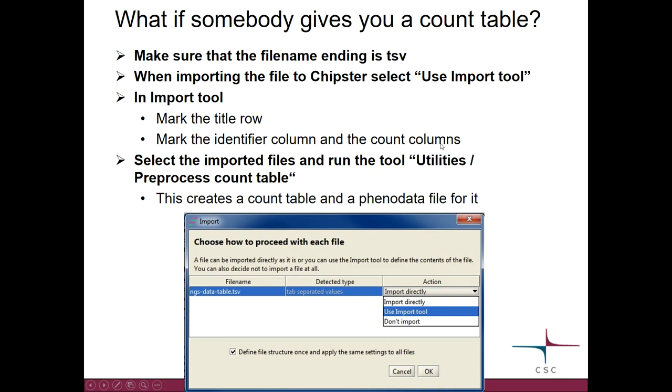Once you have done this, it will give you a file for each sample. You select all of those and run the utilities tool called preprocess count table. So that will convert the count table to a format that Chipster understands, and it will also create a phenodata file for it.